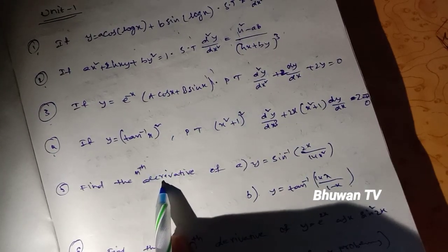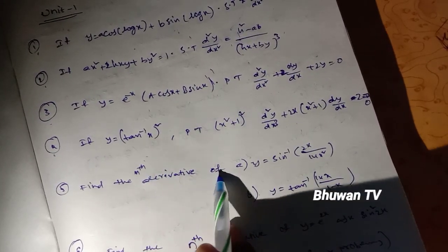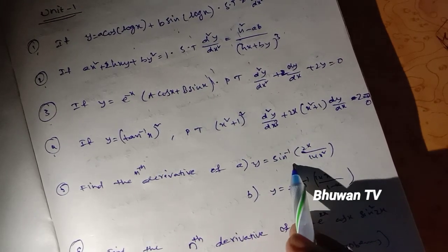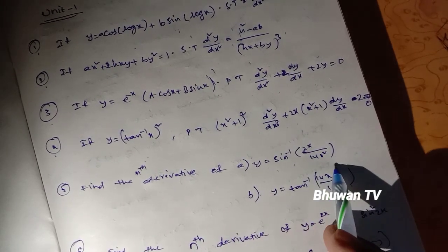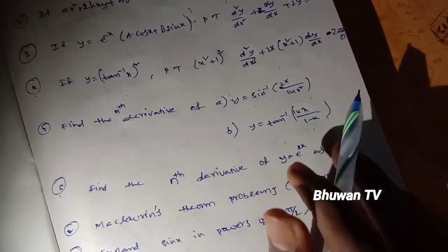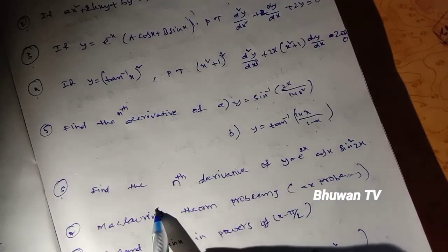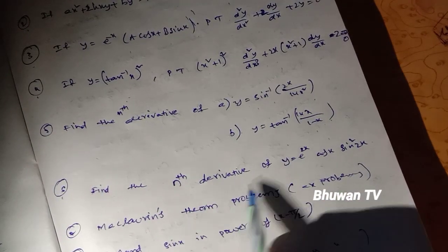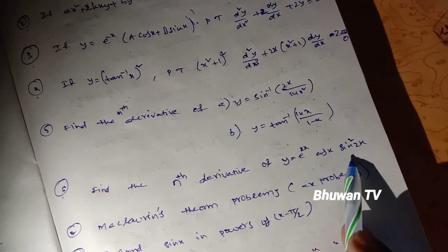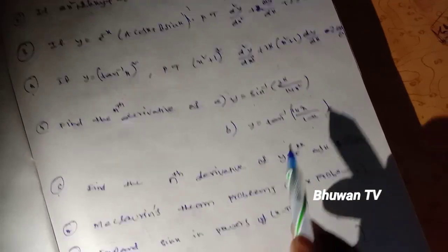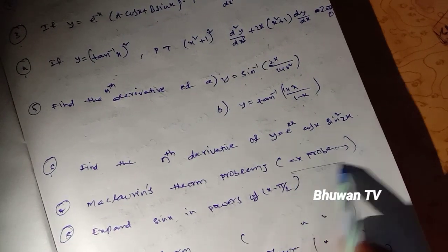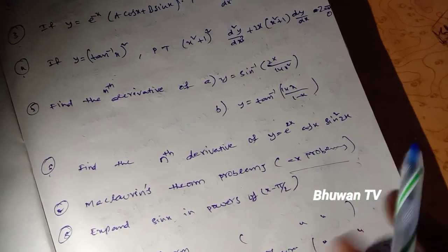Find the nth derivative of: (1) y equals sin⁻¹(2x), (2) y equals tan⁻¹(x / (1 minus x²)), and (3) y equals e^(2x) cos x sin²(2x). Next, Maclaurin's theorem problems — example problems for each.